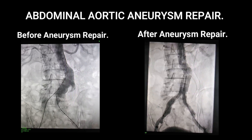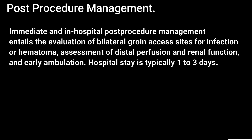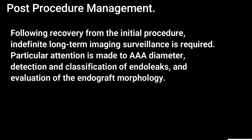In this picture, you can see both pre- and post-stenting of the abdominal aortic aneurysm arteries. Immediate and in-hospital post-procedure management entails evaluation of bilateral groin access sites for infection or hematoma, assessment of distal perfusion and renal function, and early ambulation. Hospital stay is typically one to three days. Following recovery from the initial procedure, indefinite long-term imaging surveillance is required.